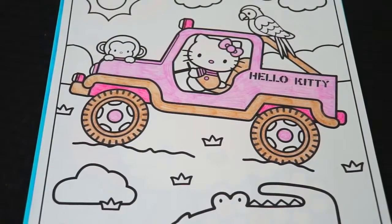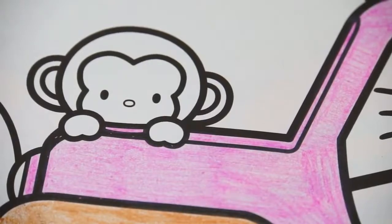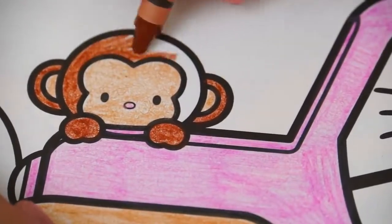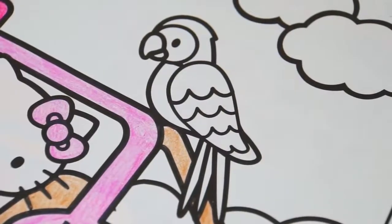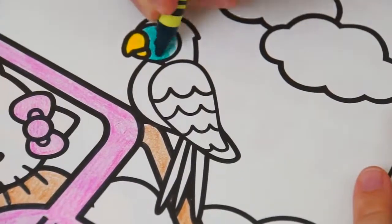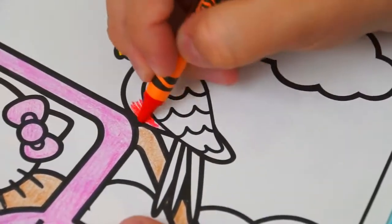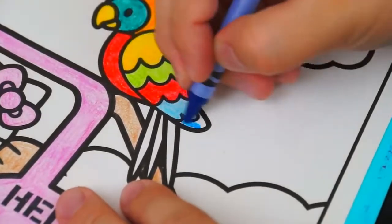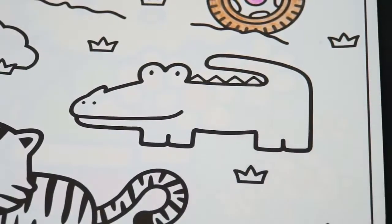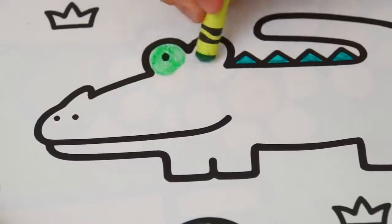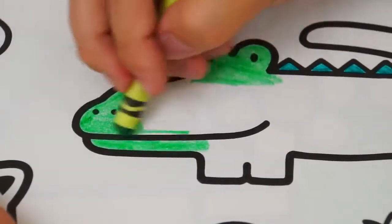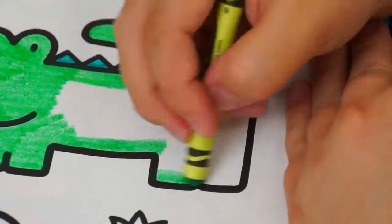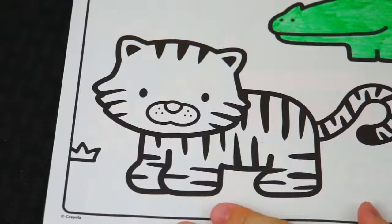Now let's color in some of her safari friends. Let's make this little monkey brown. Next let's color in this parrot a rainbow of colors. Now let's make this alligator green. And let's make this tiger orange.